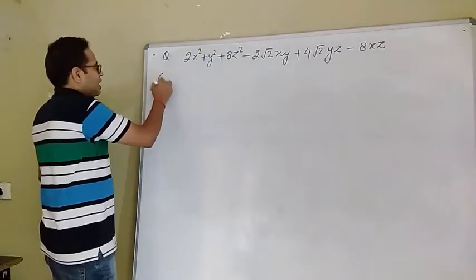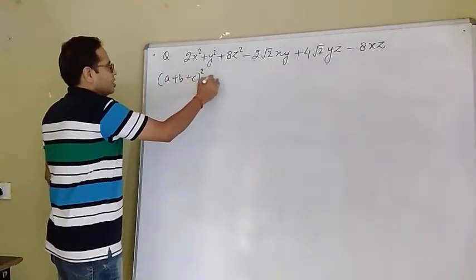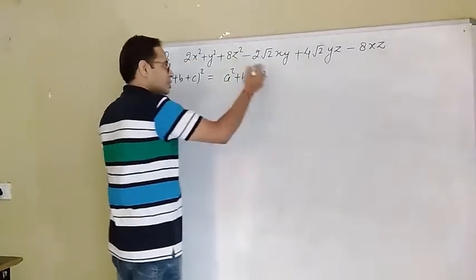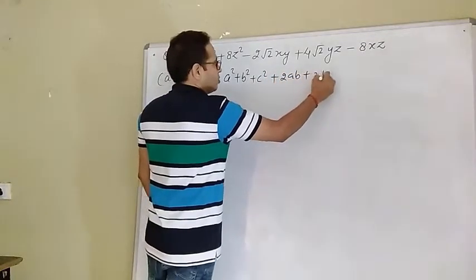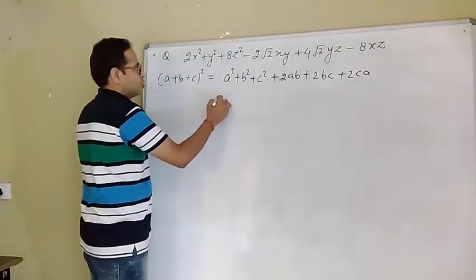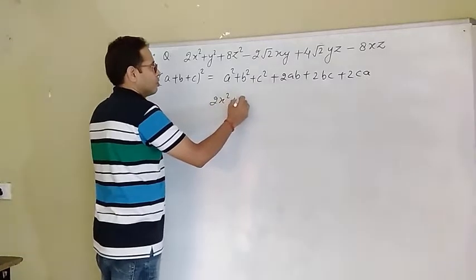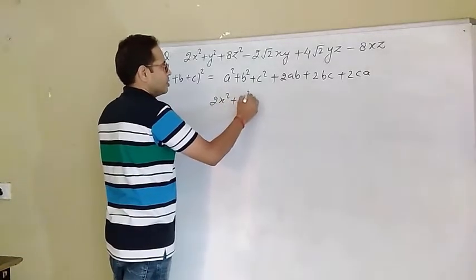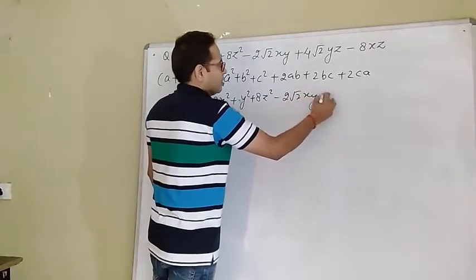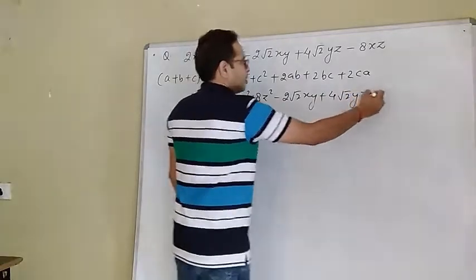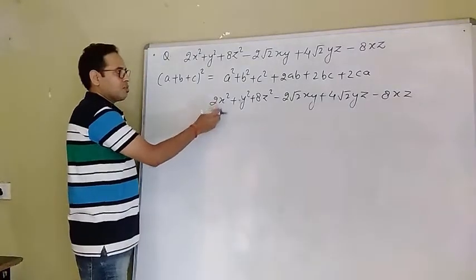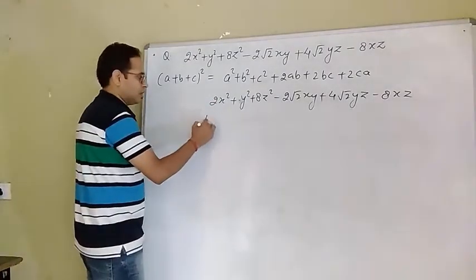We know that (a + b + c)² = a² + b² + c² + 2ab + 2bc + 2ca. Now looking at the expression 2x² + y² + 8z² - 2√2 xy + 4√2 yz - 8xz, we can write 2x² as (√2 x)², y² as y², and 8z² as (2√2 z)². Can we write it as a perfect square?